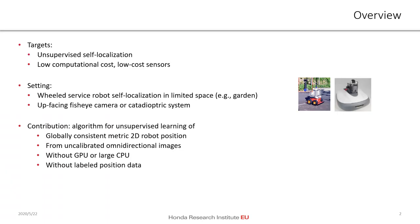The target of this work is unsupervised self-localization with low computational cost and low-cost sensors. Our setting is a wheeled service robot self-localizing in limited space like a garden using an up-facing fisheye camera or catadioptric system. We contribute an algorithm for unsupervised learning of a globally consistent metric 2D robot position using uncalibrated omnidirectional images, without a GPU or large CPU and without labeled position data.